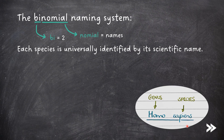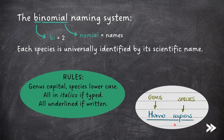In the case of us humans, we are called Homo sapiens, because Homo is our genus, and sapiens is our species. There are a few rules which you need to know: the genus always has to start with a capital letter, and the species is written entirely in lowercase. Everything is in italics if typed, or underlined if written.